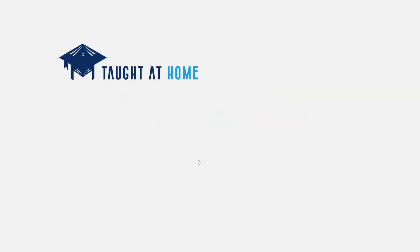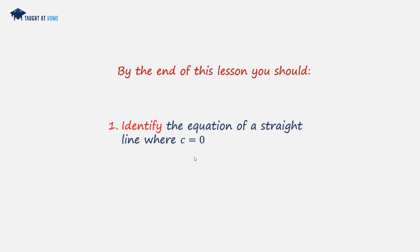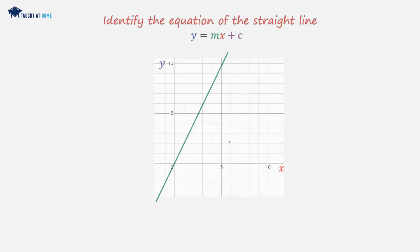Equation of a straight line, part 3. What we're going to be doing is identifying the equation of a straight line from the given graph. This is where the line passes through the origin, so c is equal to 0. In example 1, we have a line that passes through the origin, and we have to find the equation, which will be in the form y is equal to mx plus c. So we have to find the gradient.